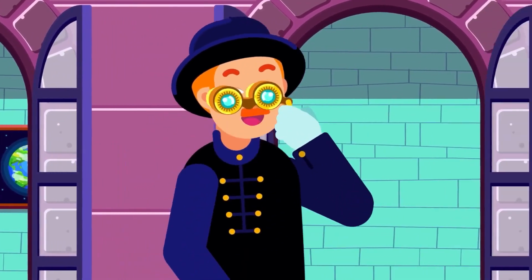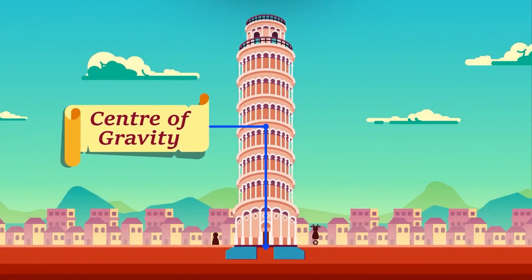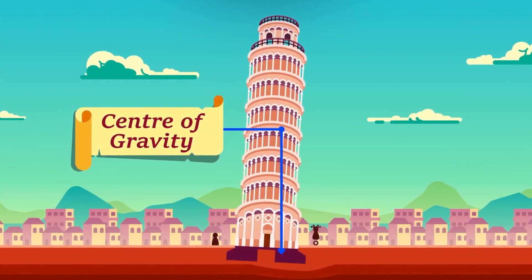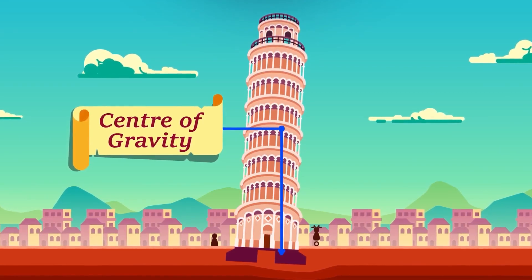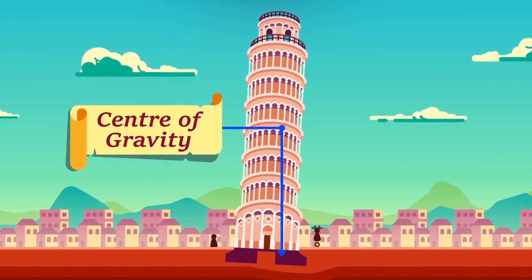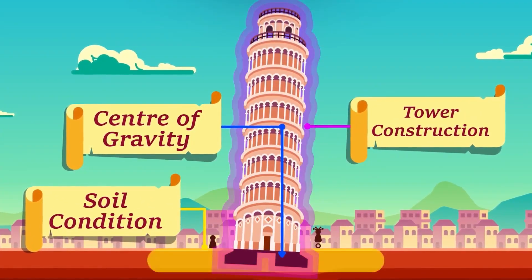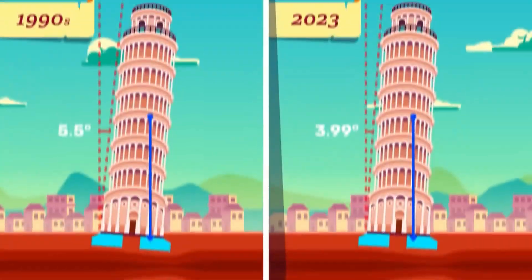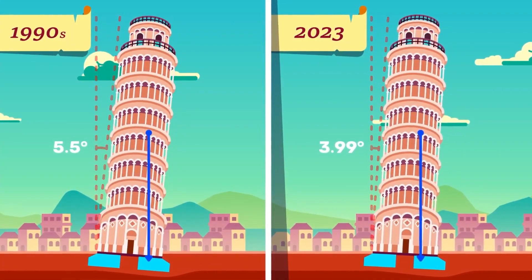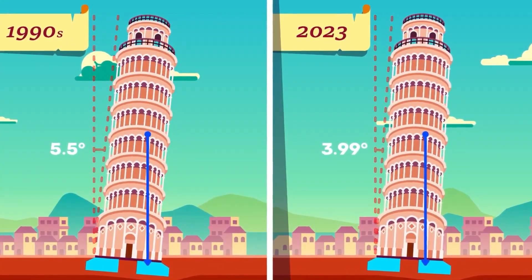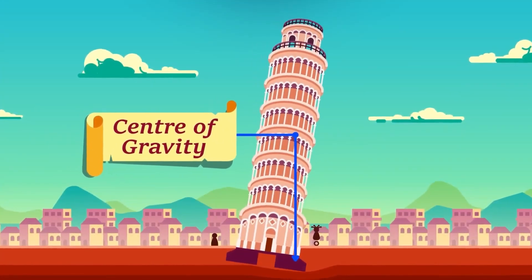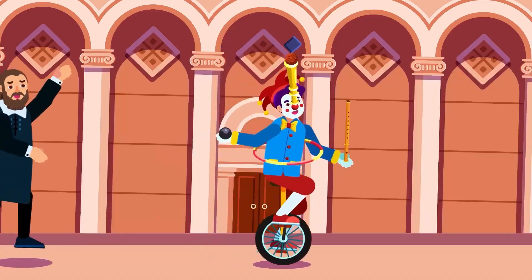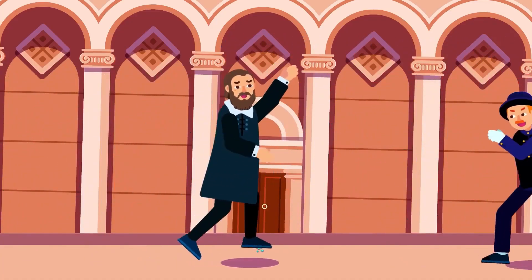Knowing the center of gravity is very important to observe a system's equilibrium, especially in construction. Look at the Pisa Tower. As it leans southward, the center of gravity also started shifting. To correct the position of the tower and prevent it from falling, the engineers not only needed to know the soil condition and the tower construction, but also the tower's center of gravity and to keep it on the base. The center of gravity of the tower today doesn't differ much compared to where it was 30 years ago, because the vertical line passing through this center point is always kept within the base to stop the tower from falling over. This is what makes the Pisa Tower among the wonders of the world.